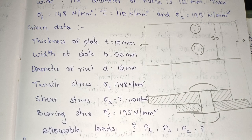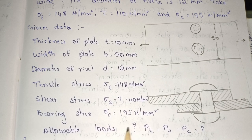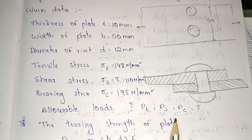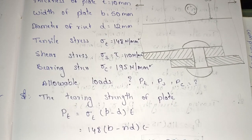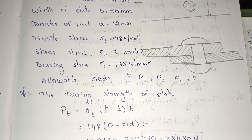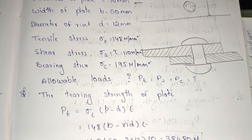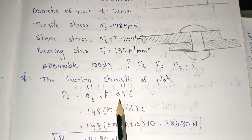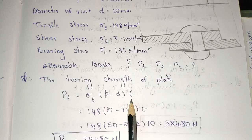Here, determine the allowable loads — we need to find out pt, ps, and pc. First, find out the tearing strength of the plate. The formula is pt = Sigma T × (p − d) × t, which is the actual formula. Here, pitch p value — since width is given, we use width minus N into d.